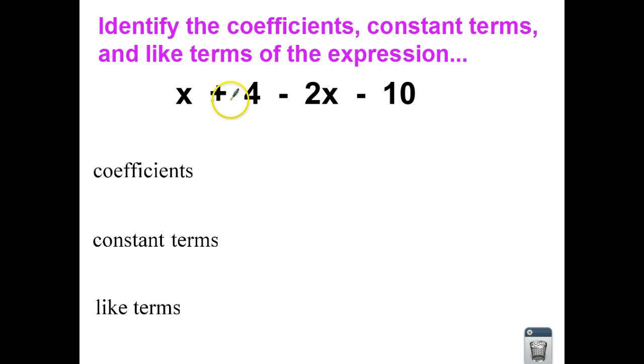So if I'm going down the line right here, I see that I have the variable called x. Now, if I'm looking to the number or integer that is stuck to the x, it is invisible. It's right here in front. So how many x's do I see right here? I see 1x. So one of my coefficients is 1.